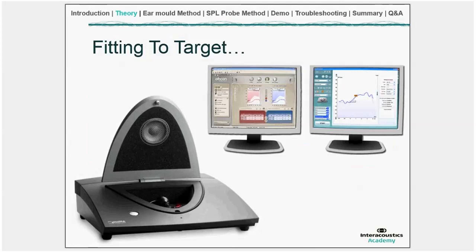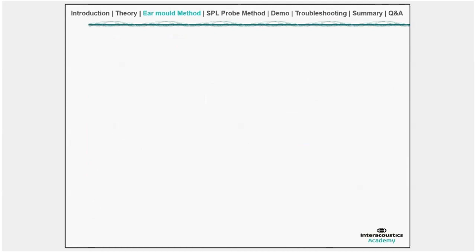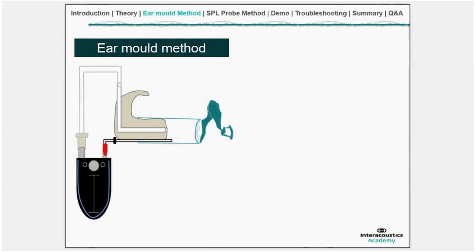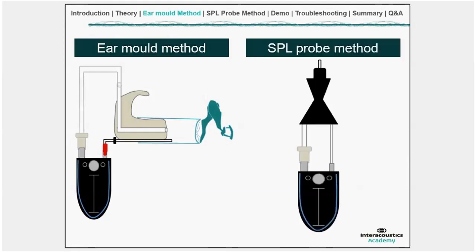There are two methods for recording the RECD. The most popular in the literature is the ear mould method — the gold standard — because it accounts for the occluded ear response with the patient's own ear mould in position. The second is the SPL probe method, which is becoming very popular. Clinicians often use it when the ear mould method isn't possible, as it's easier to perform and less susceptible to the errors the ear mould method can cause.